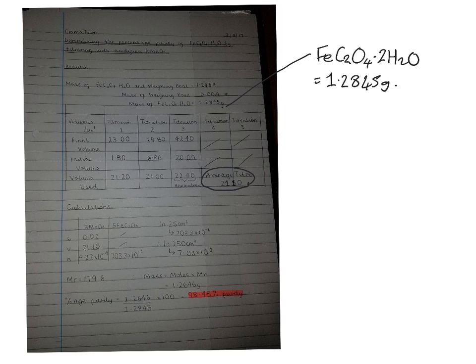First of all, you've got the manganate ions which are being reduced to Mn²⁺ ions. So therefore we need to balance this half equation. We need four waters on this side, and therefore we need eight hydrogens on this side, and therefore five electrons. So when this is getting reduced, it's gaining five electrons.